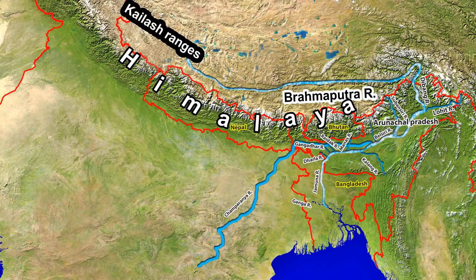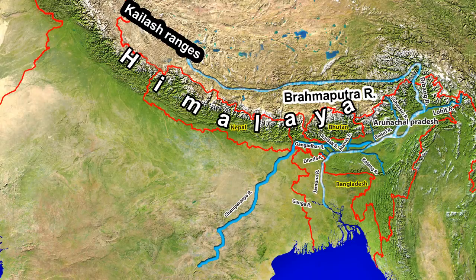Its left bank tributaries are Redak, Subansiri, Belsiri, Manas, Champuman, Gangadhar, Raida, Dharla and Tista. Its right bank tributaries are Dibru, Burhi Dihing, Noa Dihing, Dikhu and Kalang rivers, and it drains into the Bay of Bengal.